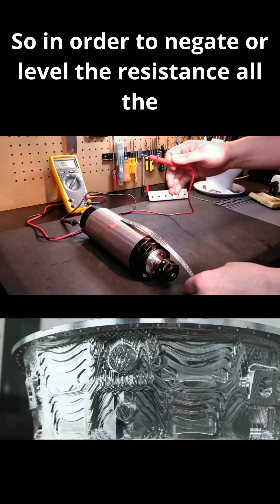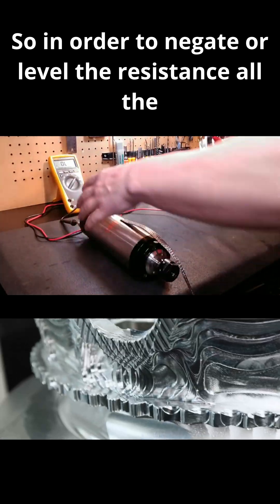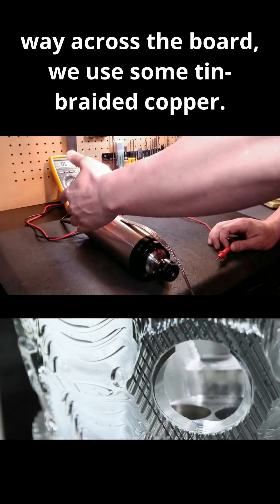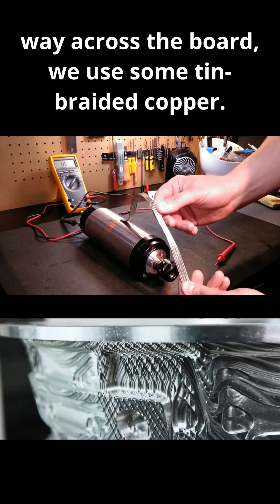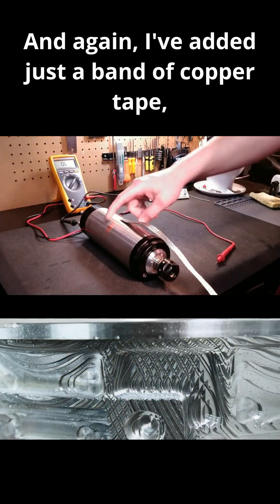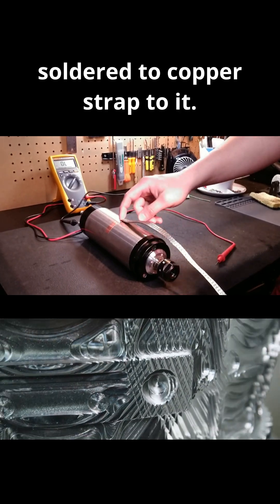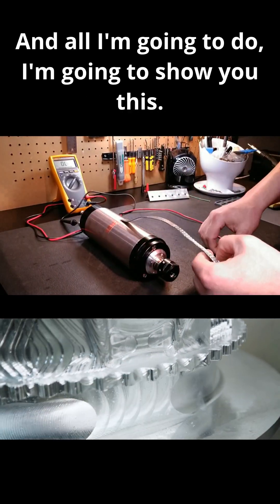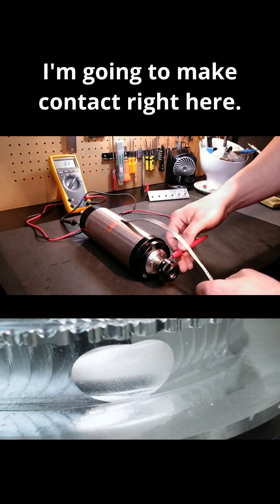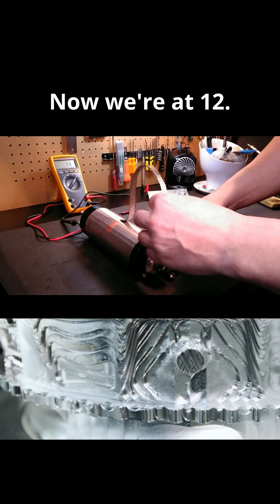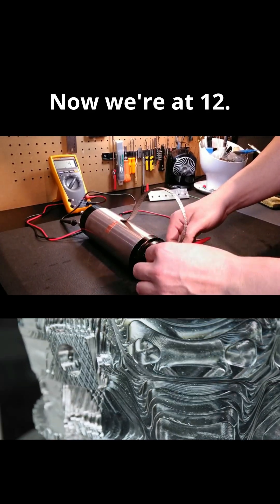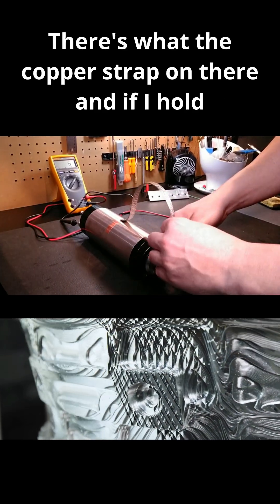So in order to negate or level the resistance all the way across the board, we use some thin braided copper. And again, I've added just a band of copper tape, soldered the copper strap to it. And all I'm going to do—I'm going to show you this. I'm going to make contact right here. Now we're at 12. Here's what happens with the copper strap on there if I hold it to it.